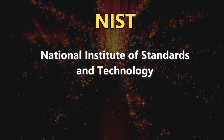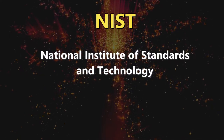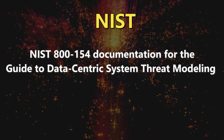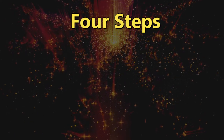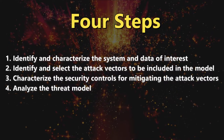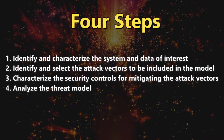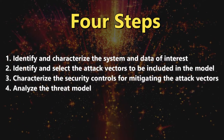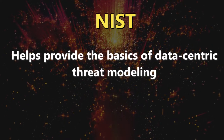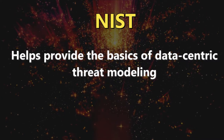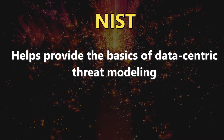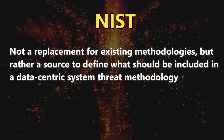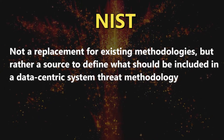This last one's pretty important as well, and it's from NIST — the National Institute of Standards and Technology — which has its own threat modeling system in the form of a guide. The following information is from the NIST 800-154 documentation for guide to data-centric system threat modeling. The steps are: one, identify and characterize the system and data of interest; two, identify and select the attack vectors to be included in the model; three, characterize the security controls for mitigating the attack vectors; and four, analyze the threat model. What's good about this model is that it provides the basics of data-centric system threat modeling, and it's worth noting that NIST didn't create this as a replacement for existing threat methodologies, but rather as a source to define what should be included in a data-centric system threat methodology.